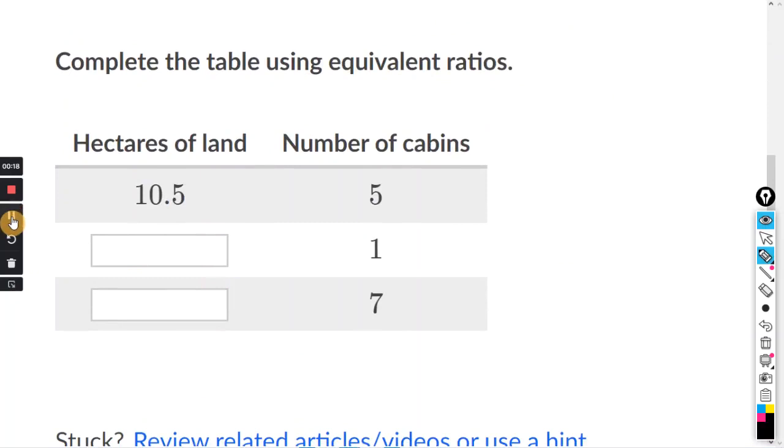I think the best way to do this is to set up a ratio and proportion. So for this value here, let's just call it X. And this here is a ratio, 10.5 to 5, and that's going to equal X to 1.